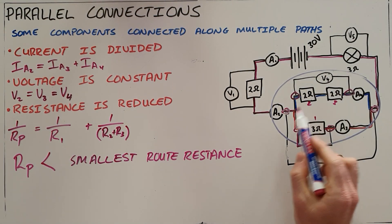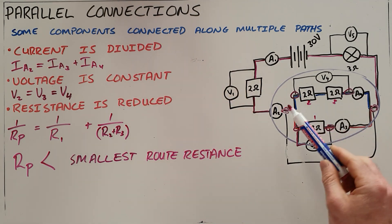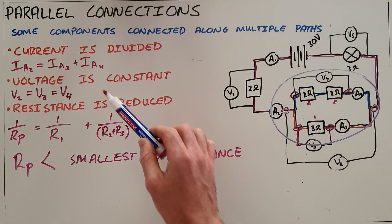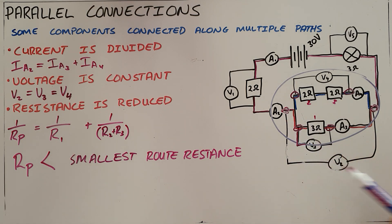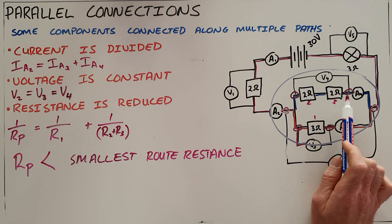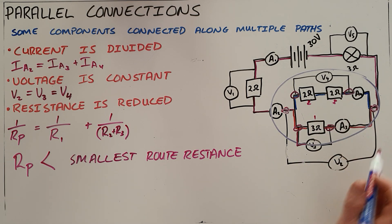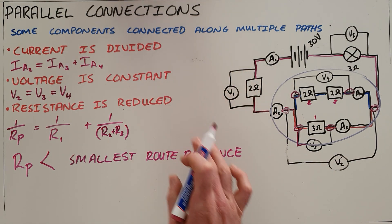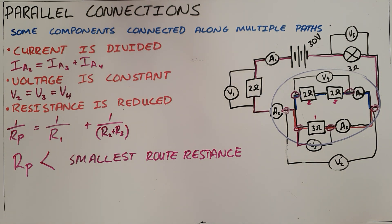In summary, a parallel connection will always divide the current because current must choose a path to follow. The voltage across any arm will always be constant and equal to the total voltage across the entire parallel connection. And the resistance will always be reduced because there are more paths to follow, making the equivalent resistance lower than any individual arm resistance. Once you understand these three rules, you can use Ohm's law to solve for any unknowns in a parallel circuit.